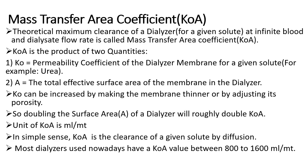The next characteristic is mass transfer area coefficient, or K0A. K0A is defined as the theoretical maximum clearance of a dialyzer for a given solute such as urea at infinite blood and dialysate flow rates. K0A is the product of K0 — the permeability coefficient of the dialyzer membrane for the given solute — and A, the total effective surface area of the membrane. K0 can be increased by making the membrane thinner or by adjusting its porosity, and doubling the surface area roughly doubles the K0A value.